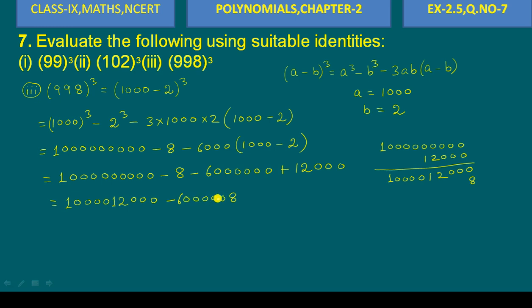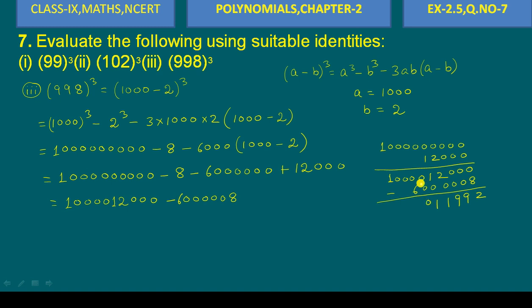After performing the subtraction step by step — we get 8, carry 1, then 9, carry 1, then 9, then 2 minus 1 is 1, then 0, then 6, then 4 carry 1, then 9, 9. So the result comes out to 994,011,992. This is our answer.